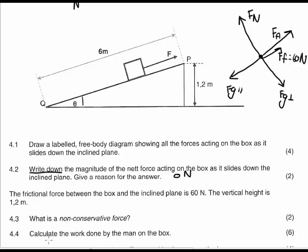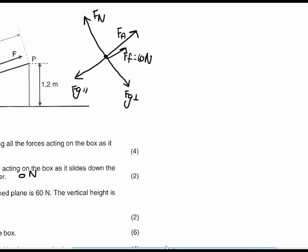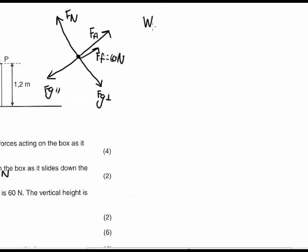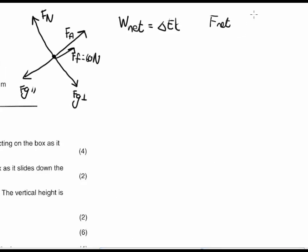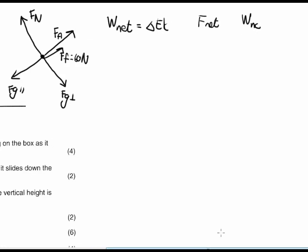For question 4.4, calculate the work done by the man on the box. There are basically three ways to answer this. One is using the work-energy theorem: W_net equals the change in kinetic energy. We can also calculate F_net first using all the forces. And we can also say that the work done by non-conservative forces equals the change in EK plus the change in EP. So there are three ways to approach this question.